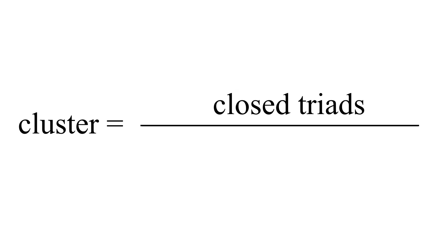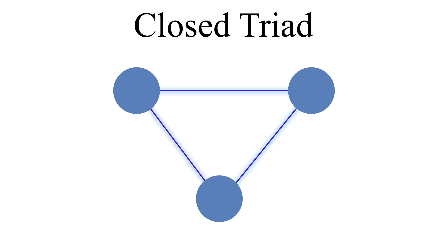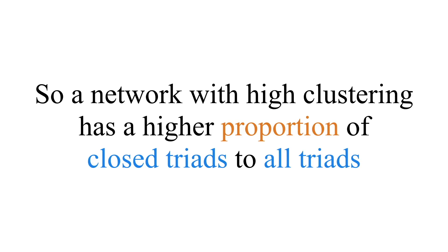Why is clustering related to transitivity? A cluster, at least globally speaking, is the proportion of closed triads. So if Jim and I have a mutual friend and we're all friends with each other, that's a closed triad — over all the triads in the network, both open and closed. Networks with higher clustering have a higher proportion of closed triads to all triads.